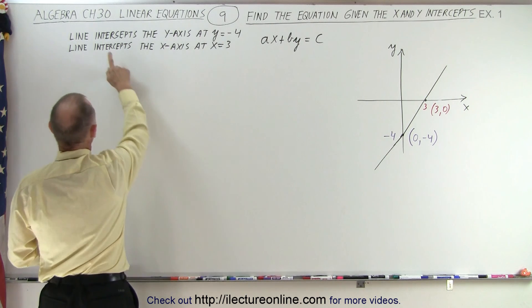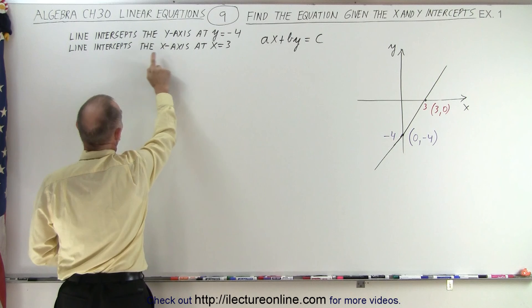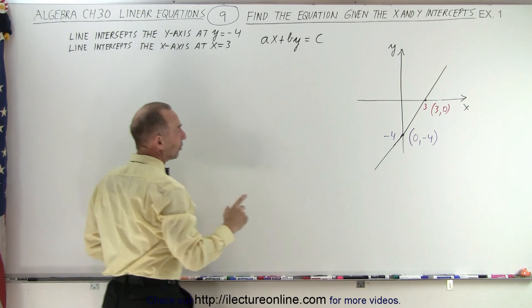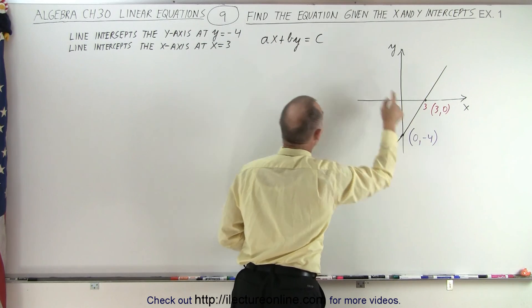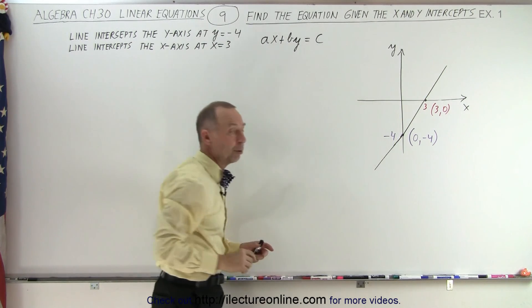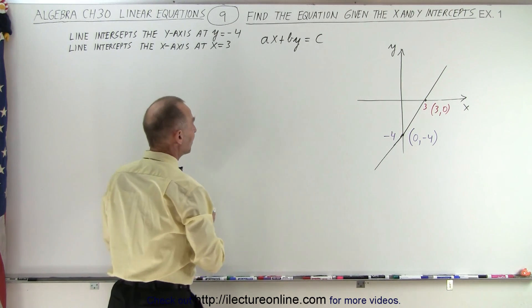So, we know that the line intercepts the y-axis at y equals 4 and intercepts the x-axis at x equals 3. So, we're going to take the ordered pair 3, 0, and 0, 4, and plug them into the general form in order to find a and b. That can be done as follows.